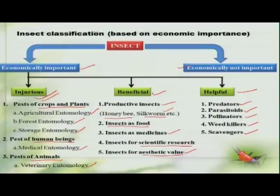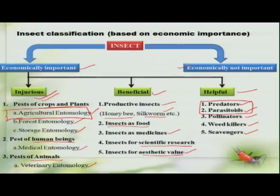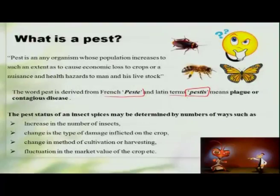In this course, we are mainly concentrating on agricultural entomology, dealing with the pests which cause damage to agricultural crops and also the predators and parasitoids which feed on these agricultural pests and are beneficial to human beings. A pest can be any organism whose population increases to such an extent that it causes an economic loss to the crop or causes nuisance or health hazards to human beings and livestock. The word pest is mainly derived from the French word 'pesteg' and the Latin term 'pestis', which means plague or contagious disease.